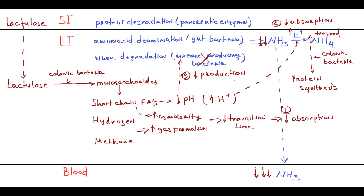To summarize, lactulose effects are based on: decreasing intestinal production of ammonia by destroying urease-producing bacteria; decreasing ammonia absorption by trapping ammonia molecules as ammonium inside the intestine; and speeding up transit time through the intestine to further reduce ammonia absorption.